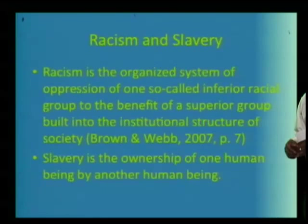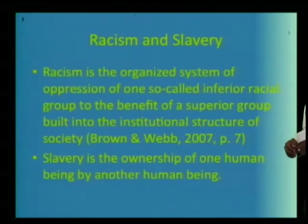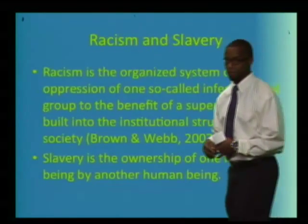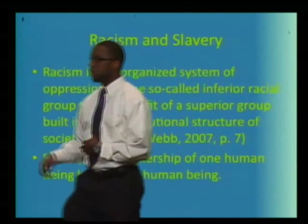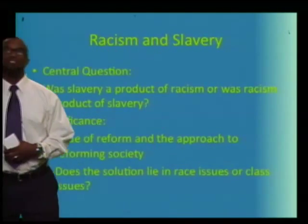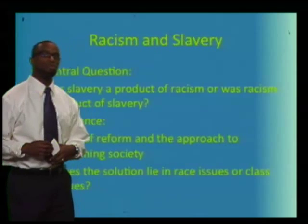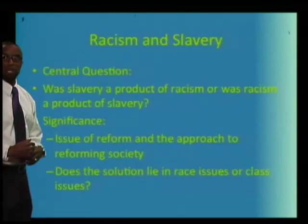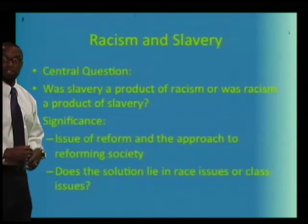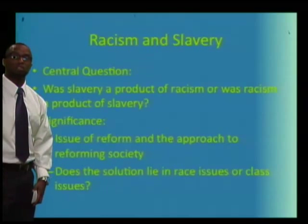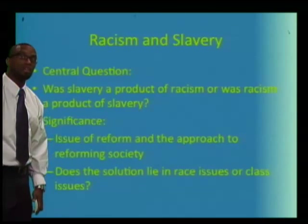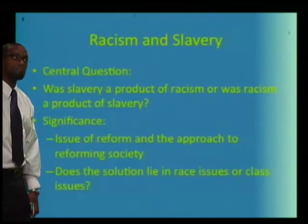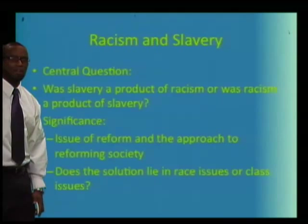Slavery as an institution is the ownership of one human being by another human being. In this primary source investigation, our central question is this: Was slavery a product of racism? Or was racism a product of slavery? And does that even matter?